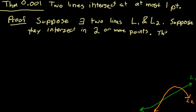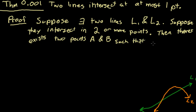Well then we can say, then there exists two points A and B such that AB is an element of L sub 1 intersect L sub 2.